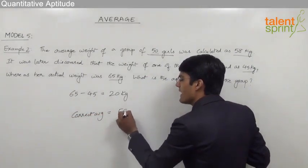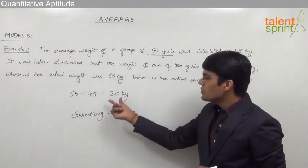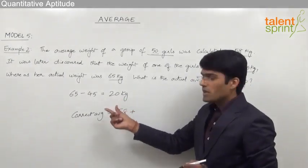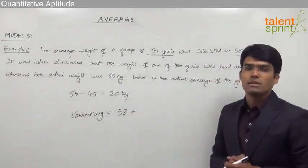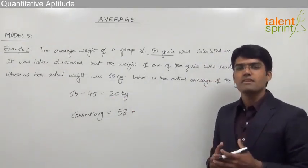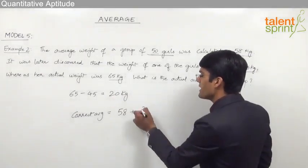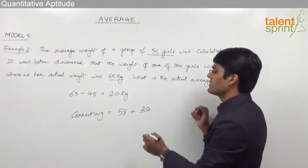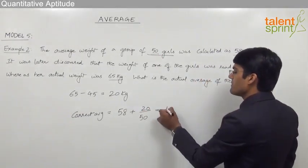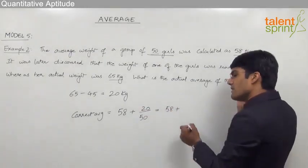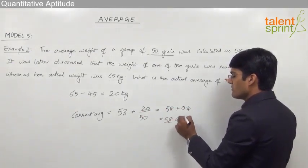The correct average should be more than the wrong average of 58. Since it is to be more, we add something — these 20 kg. But before adding 20 kg to the average, it must be distributed equally among all persons in the group, because average is always an equal distribution calculation. So 20 is divided among all 50 girls. The correct average is 58 plus 20 divided by 50, which equals 58.4 kg.